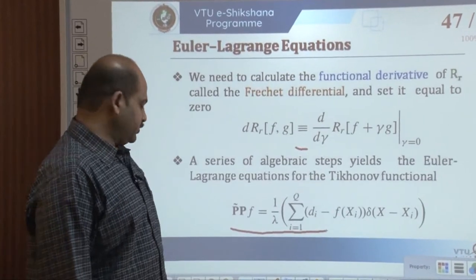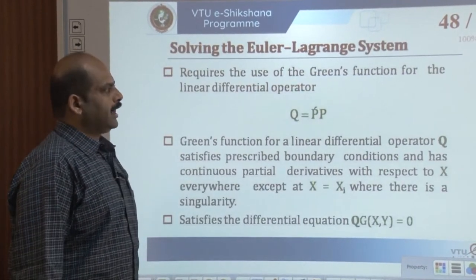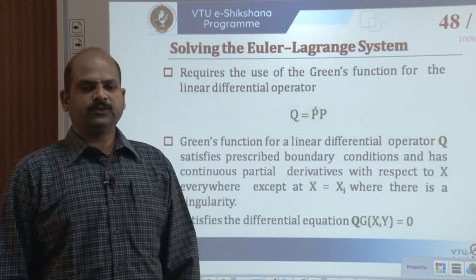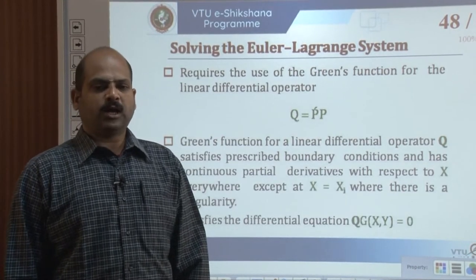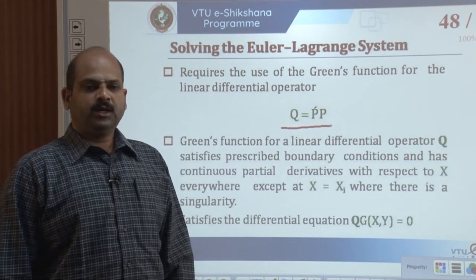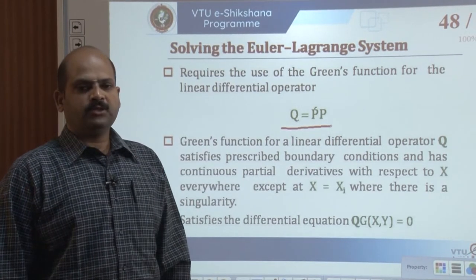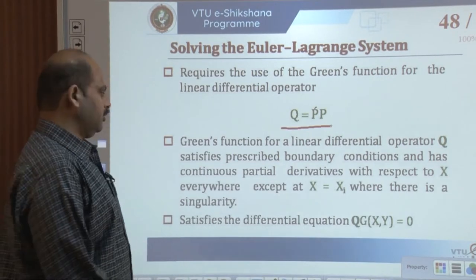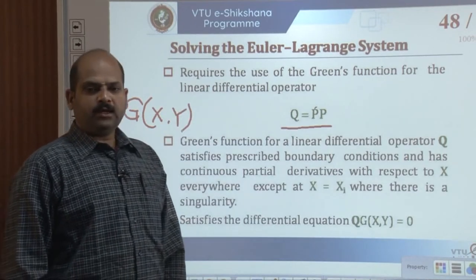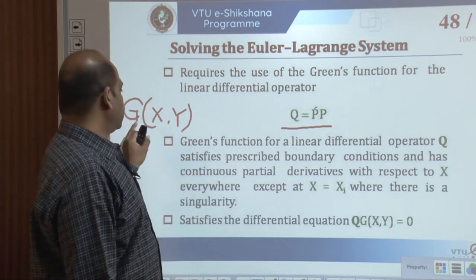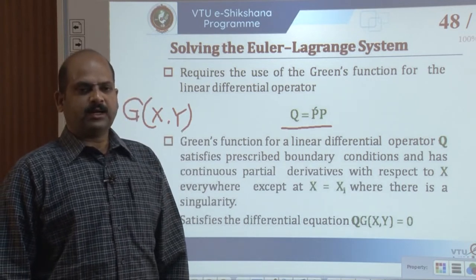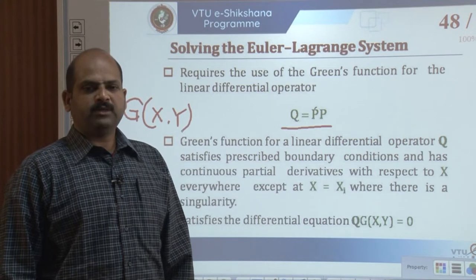In today's session we are going to see how to solve the Euler-Lagrange system. The solution of this Euler-Lagrange system requires the use of the Green's function for the linear differential operator q, which appears on the left-hand side of the equation. The Green's function g(x, y) for a linear differential operator q satisfies the prescribed boundary conditions and has continuous partial derivatives with respect to x.